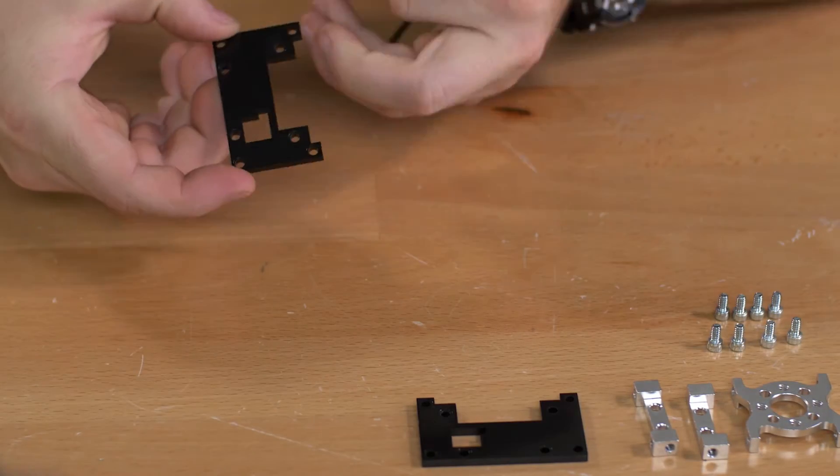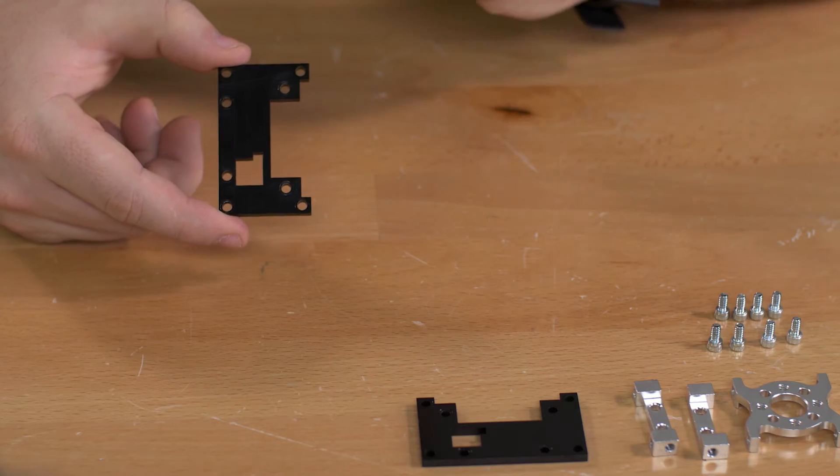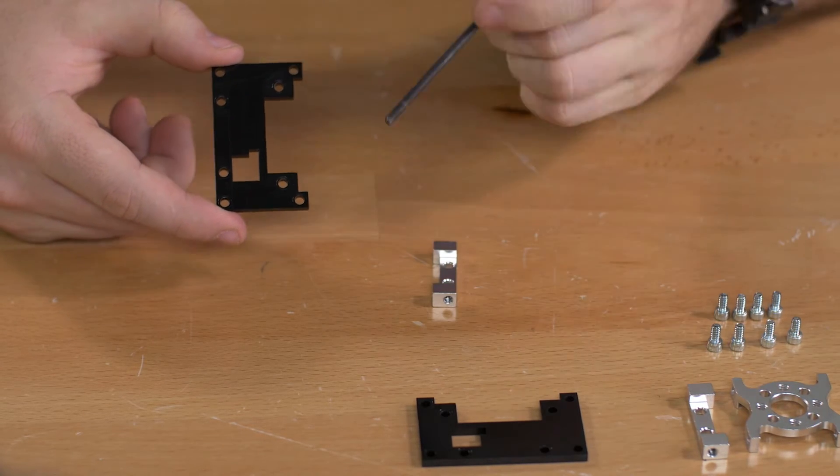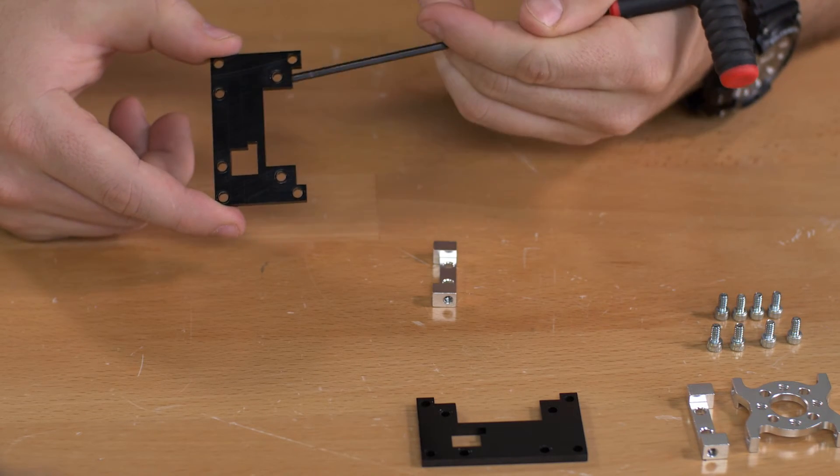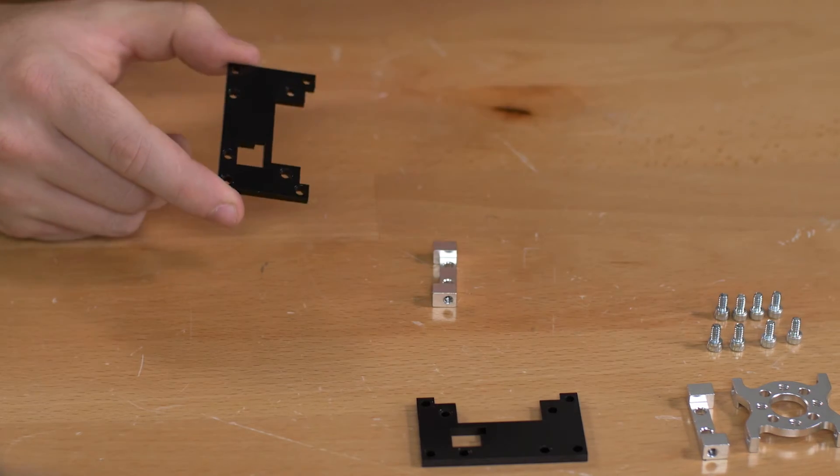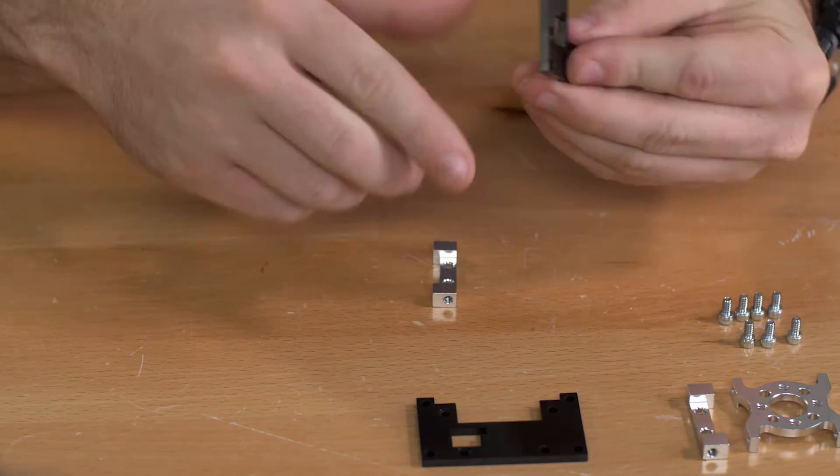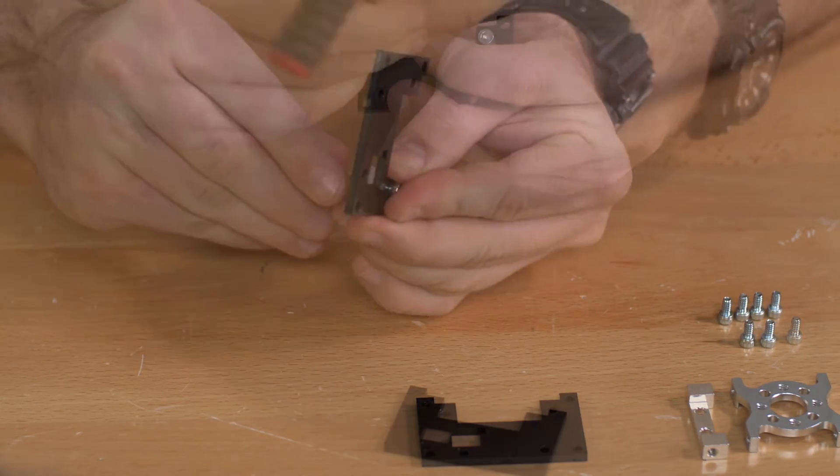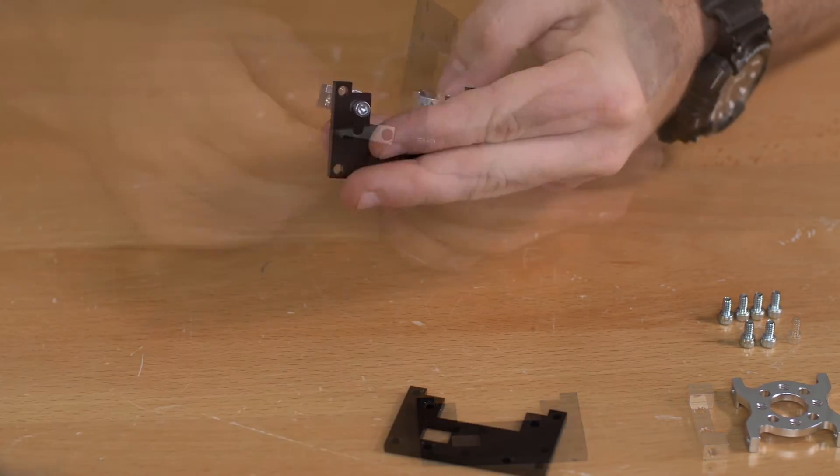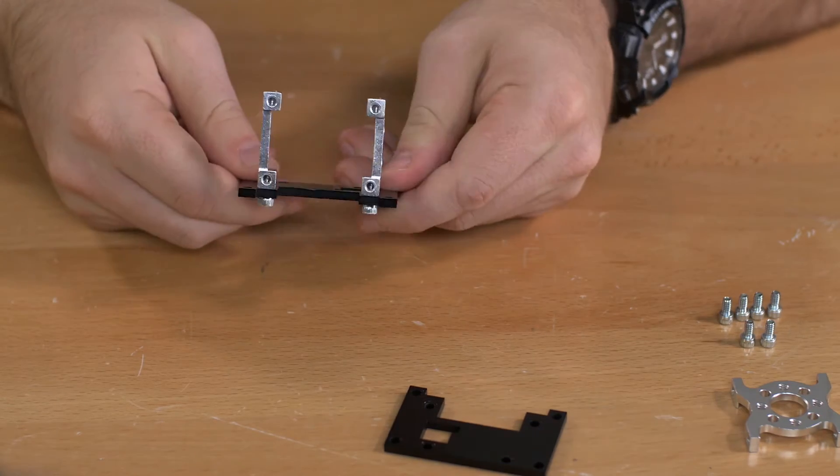You're going to start by attaching your plastic pieces to your beam brackets. They'll go in this hole here and this hole here. These use the quarter inch socket head screws. And then just like that.